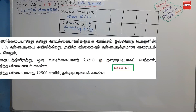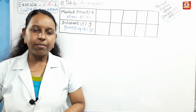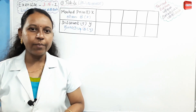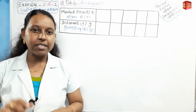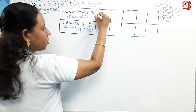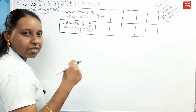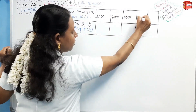Let's set up the table. We have a 50% flat discount, so we can start the marked price values at 2,000. Next values: 4,000, 6,000, 8,000, and 10,000.